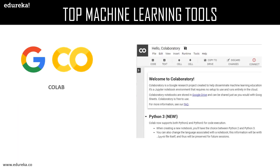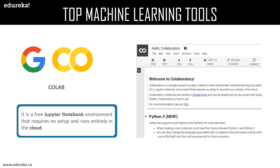Google Colab is a rather interesting product — a free Jupyter notebook environment that requires no setup and runs entirely on the cloud. It is a Google Research project created to help disseminate machine learning education and research. It is one of the top machine learning tools especially for data scientists, because you don't have to manually install any packages or libraries — just import them directly. You can save a project on Google Drive, GitHub, or any location in various formats, and it supports PyTorch, Keras, TensorFlow, and OpenCV pre-installed.